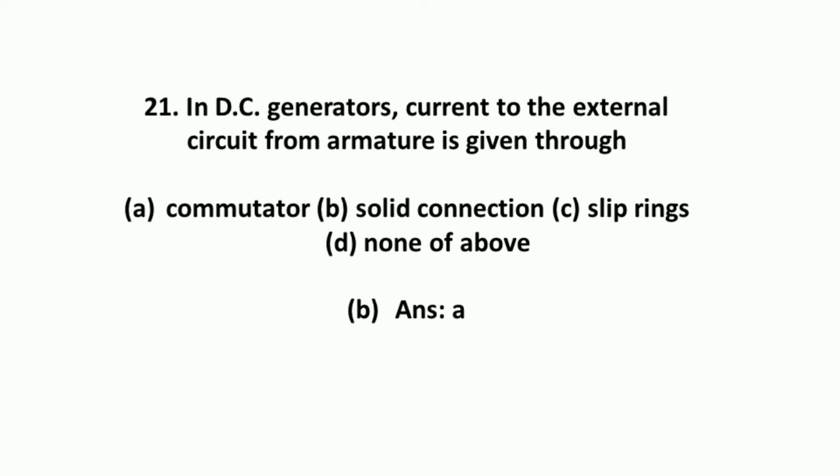In DC generators, current to the external circuit from armature is given through commutator.